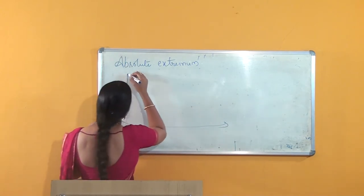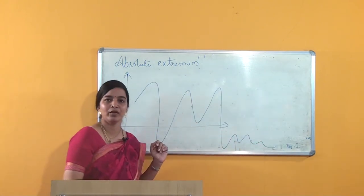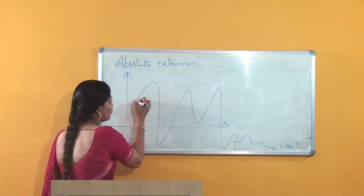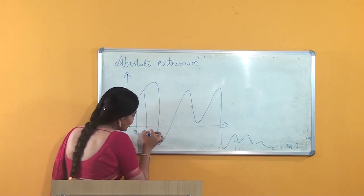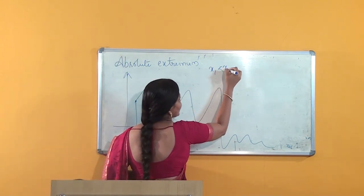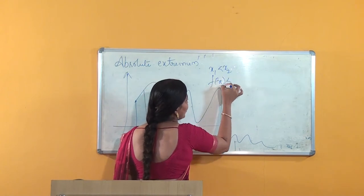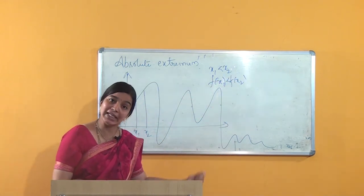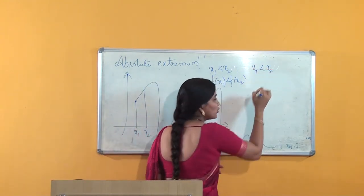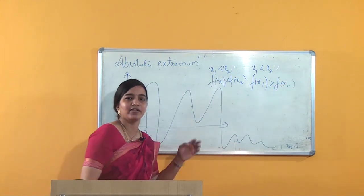Suppose I have a graph. See here — the graph is increasing. When we say the graph is increasing, suppose this is a point x1 and this is a point x2. When I say the graph is increasing, if x1 is less than x2, and the function value f(x1) is also less than f(x2), then I can say that the graph is an increasing graph.